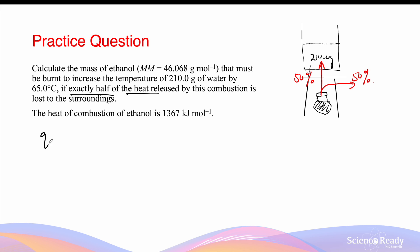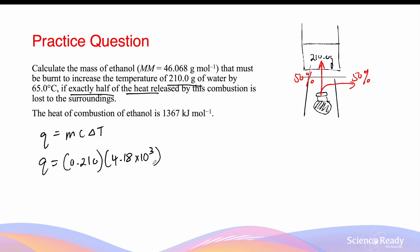We can start the question by using Q equals to mc delta T to first determine the amount of energy that was absorbed by the water, using the temperature change. So Q is equal to the mass, which is 210 grams — but remember, we have to convert into kilograms because of the heat capacity we're about to use, that is 4.18 times 10 to the power 3 joules per kilogram of water per kelvin. The change in temperature here is 65 degrees Celsius or kelvins. This gives us the energy increase of 57,057 joules absorbed by water.